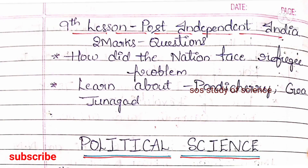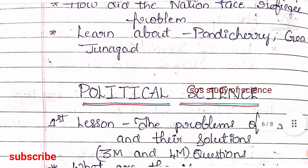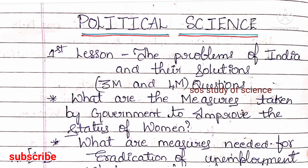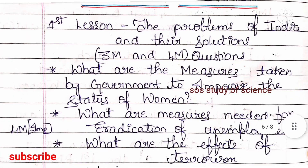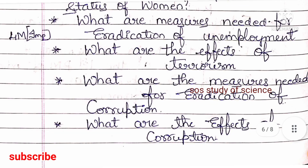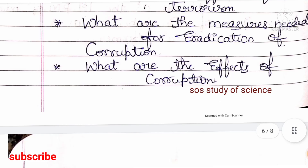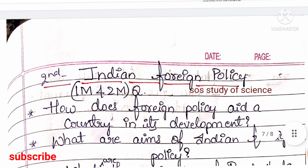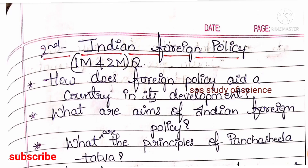Now moving to Political Science. The first lesson is the Problems of India and Their Solutions. Here you can expect 3-mark and 4-mark questions. Important concepts: measures taken by the government to improve the status of women, measures needed for the eradication of unemployment — asked for 4 marks, the effects of terrorism, measures needed for eradication of corruption, and the effects of corruption.